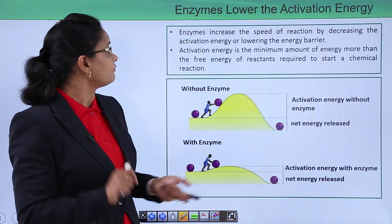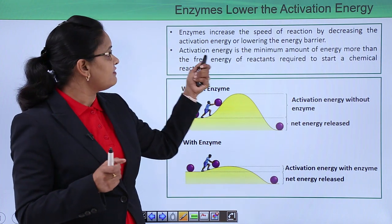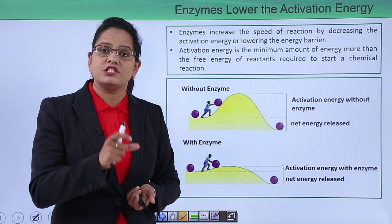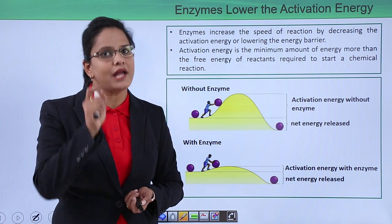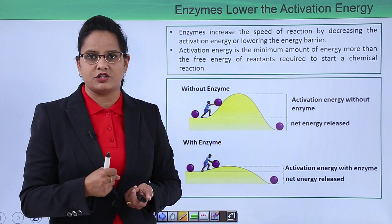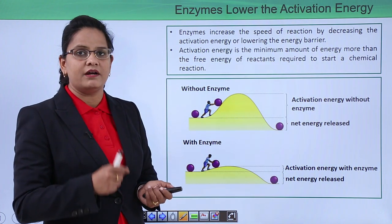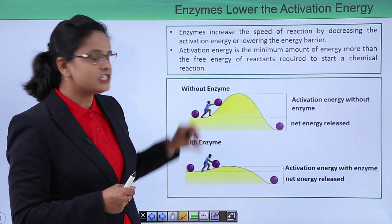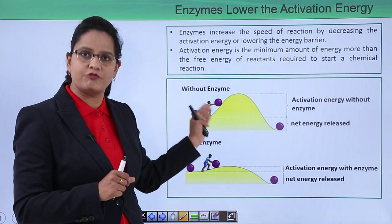Enzymes lower the activation energy. Activation energy is the minimum amount of energy — greater than the free energy of the reactant — required to bring about the reaction. Enzymes increase the speed of the reaction by lowering this activation energy. Imagine a boy pushing a ball across a hill: if the barrier is very high, the boy cannot cross it easily and will require more force.